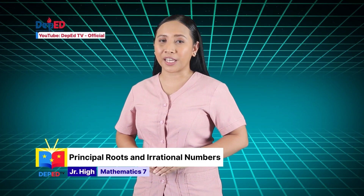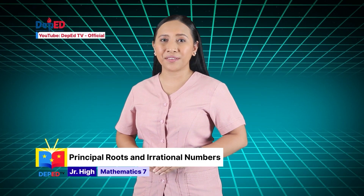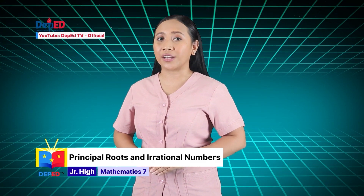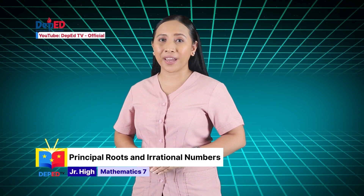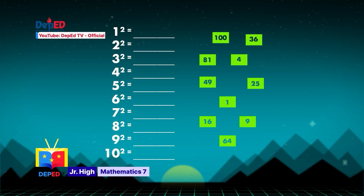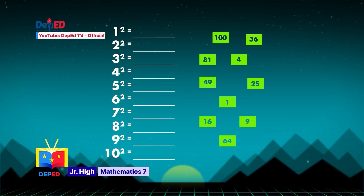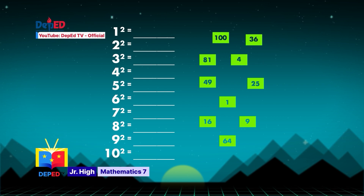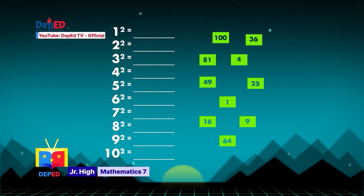When a number is multiplied by itself, the product is a perfect square. Let us take a look at this activity. Determine which of the floating boxes is the square of the given numbers. You can do this by multiplying the given base by itself.